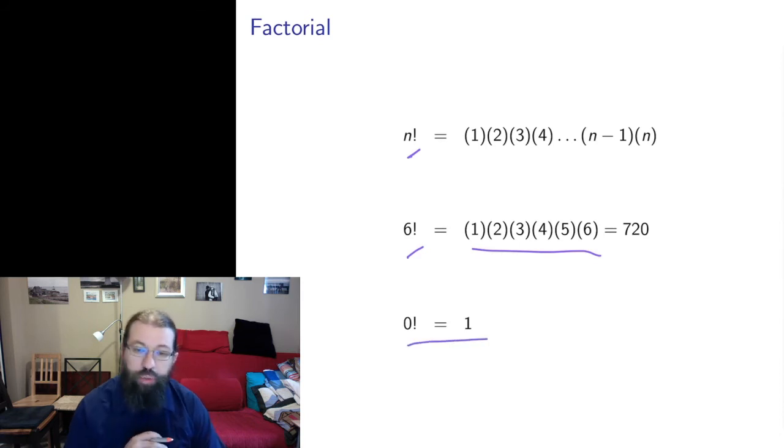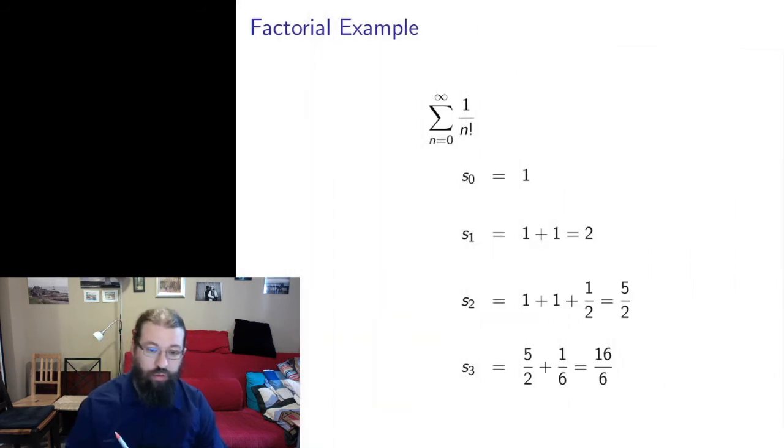We define factorials for positive whole numbers. We also define factorials for 0. And 0 factorial, by definition, is equal to 1. And there are good reasons for that. You could think of the fact that 1 is the multiplicative identity. So multiplying nothing together, what you have left with is the thing that doesn't do anything with multiplication, which is the number 1. And then if you were to start any multiplication, multiplying by 1 would work.